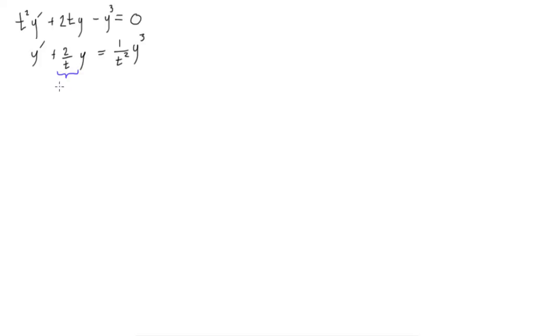Where we have this is our p of t, and this here is g of t. And we'll notice here that n is equal to 3. So what we want to do is write down a few things. First of all, n is equal to 3, so obviously 1 minus n is going to be equal to minus 2. And the other thing that we want to write is we want to make this new variable. We'll call it v is equal to y to the power of 1 minus n. So v is going to be equal to y to the power of negative 2.